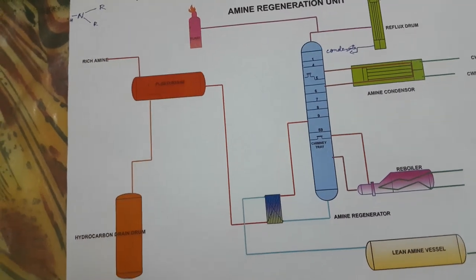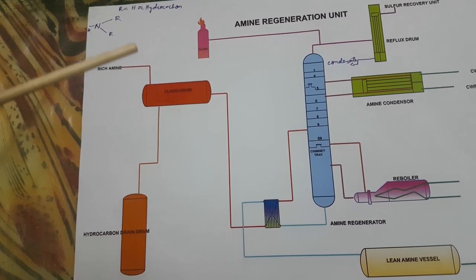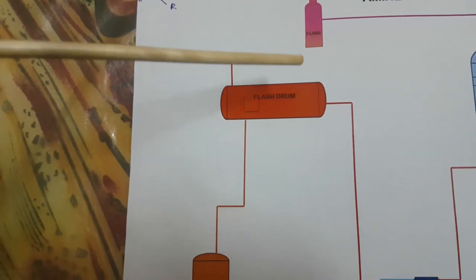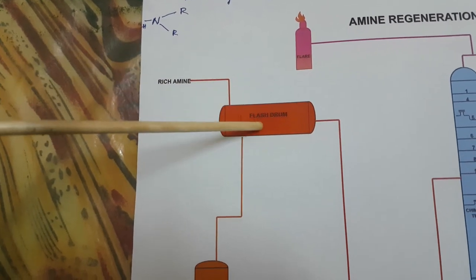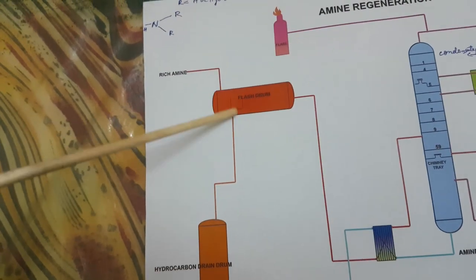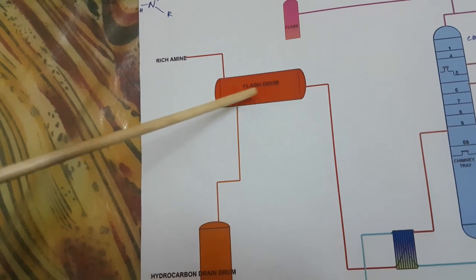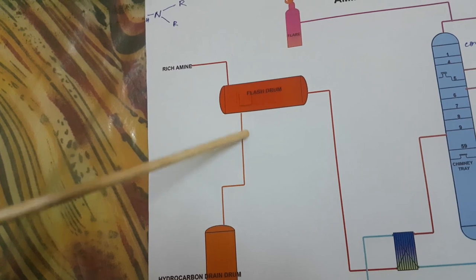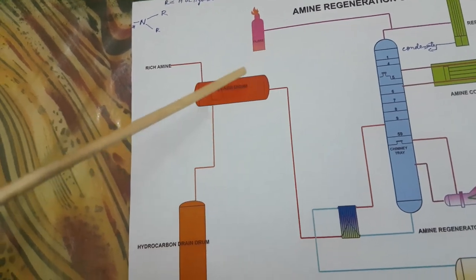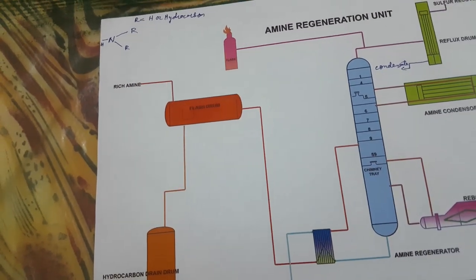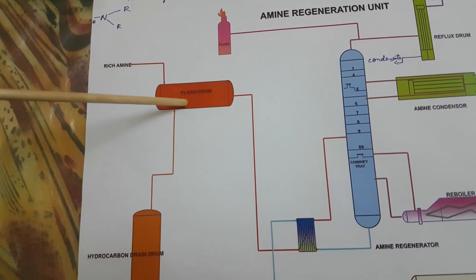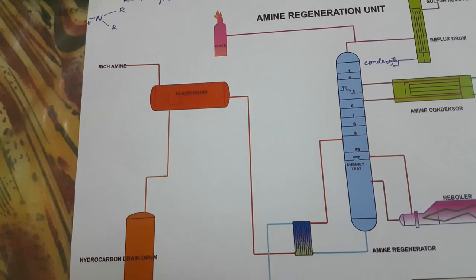This is the flash drum, in which rich amine is flashed. The function of the flash drum is to separate the flash gases, which go to the flare, and also to separate heavy hydrocarbons using a coalescing filter. The filter removes hydrocarbons, which go to the hydrocarbon drain drum — a decanter-type arrangement where hydrocarbon oil gets collected and sent to the drain drum. Rich amine which is free from hydrocarbons then goes to the stripper. We remove hydrocarbon because it contaminates the amine and causes foaming.